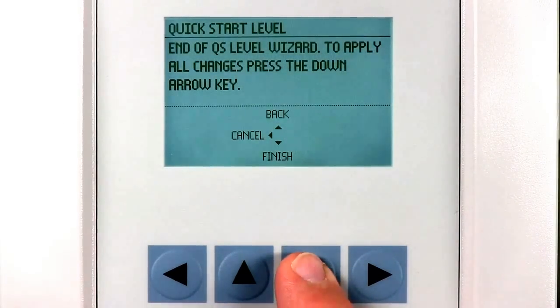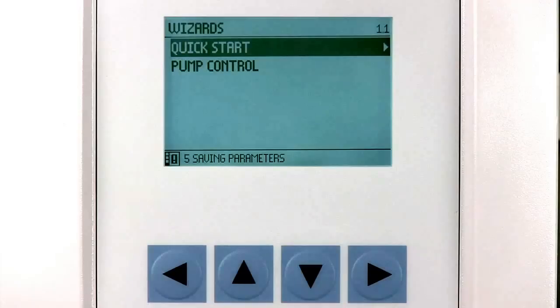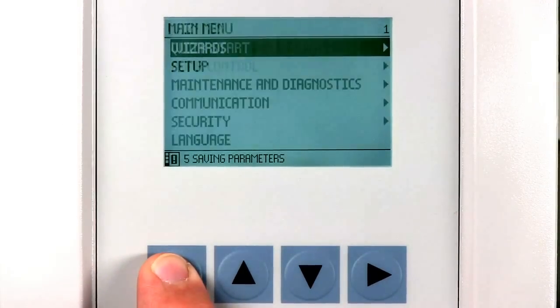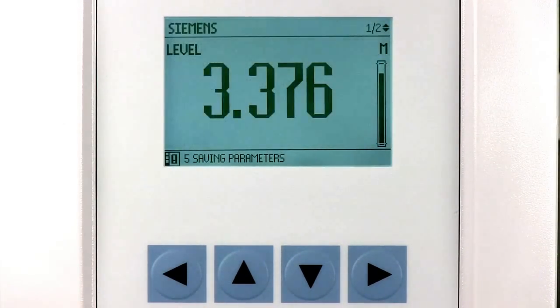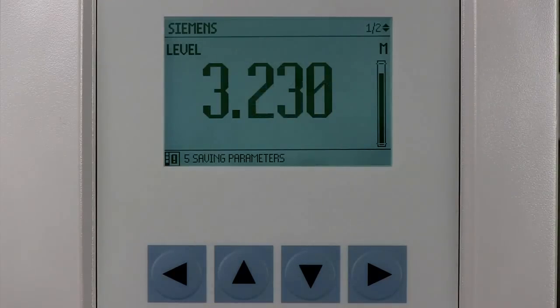Then press the down arrow key again to save all of the settings we just made. The level quick start wizard is just one of the helpful wizards we have built into the Citrans LUT400. For more information on the Citrans LUT400, please visit our website.